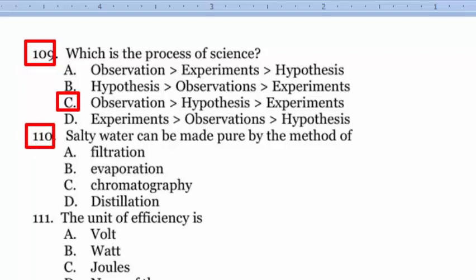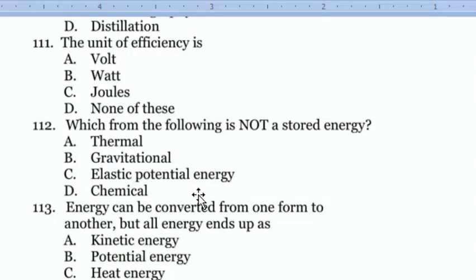Question number 109: Which is the process of science? Method of distillation. Salty water can be made pure by the method of distillation, option D. Question 111: The unit of efficiency. Efficiency has no unit, correct option D.